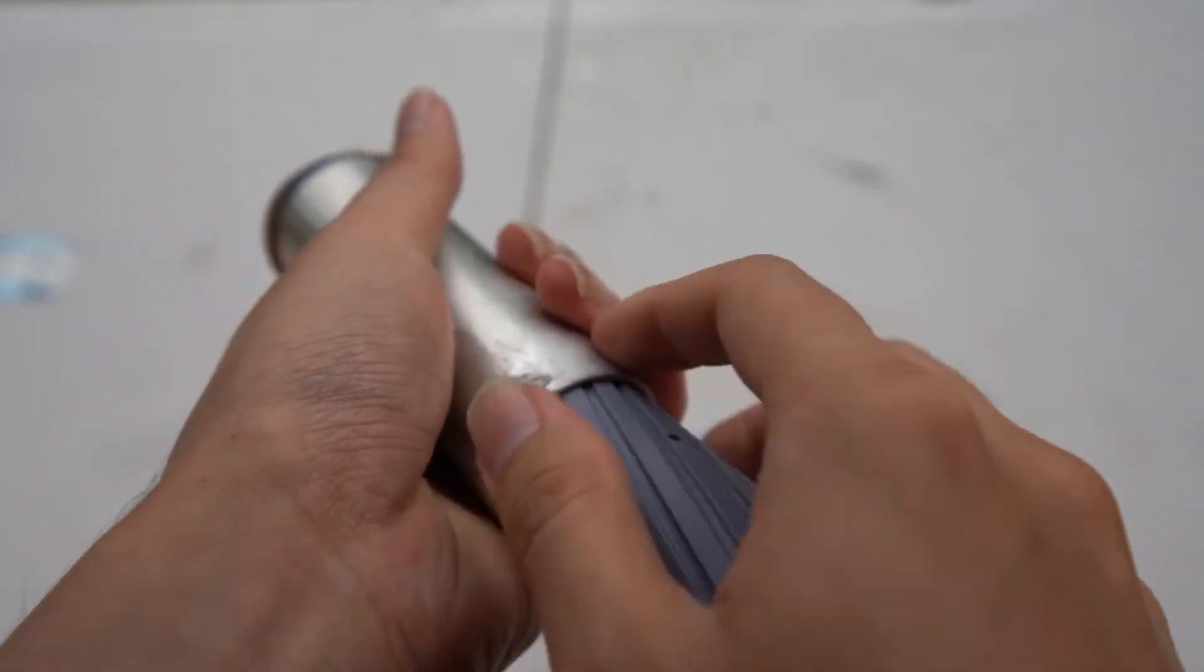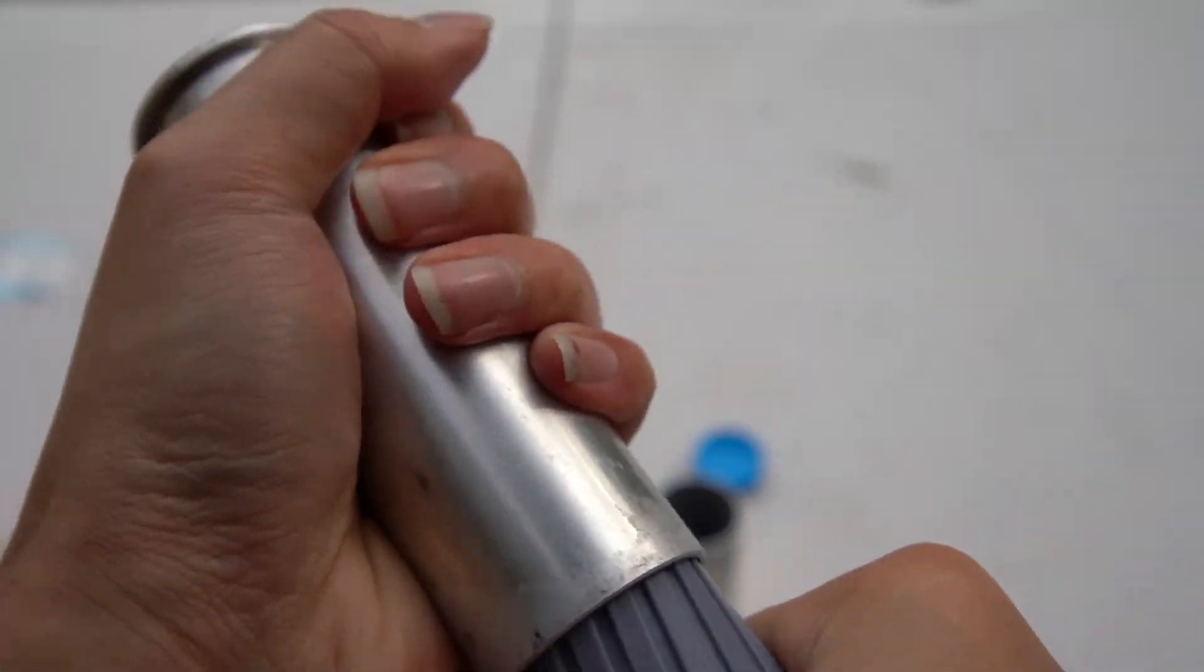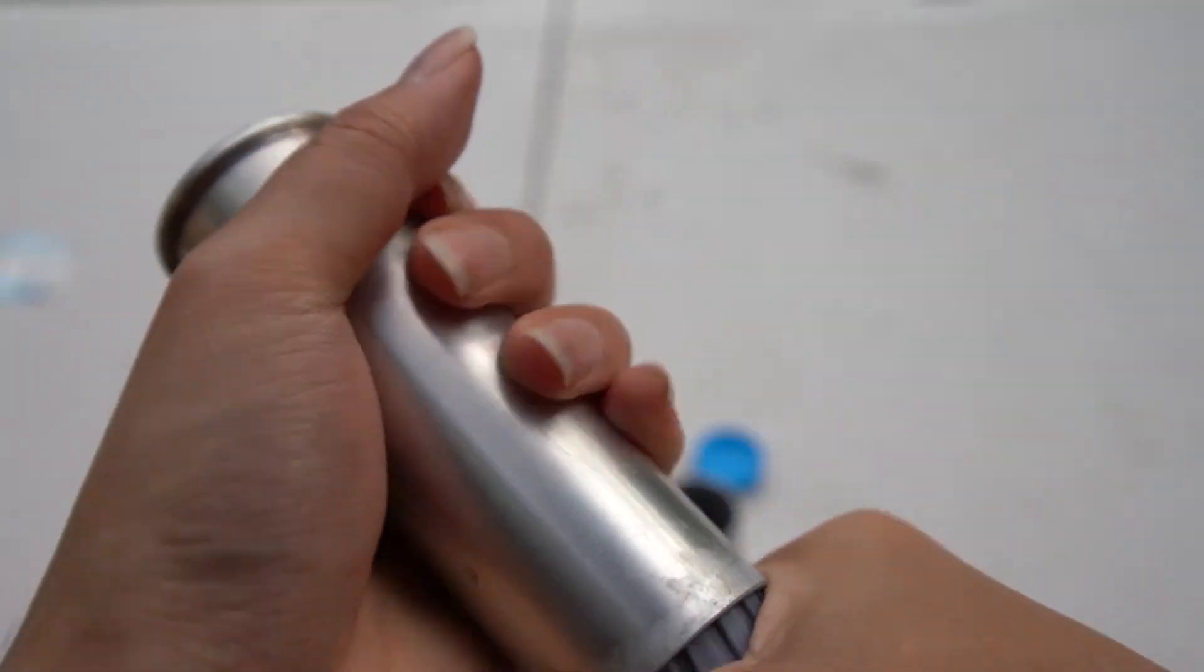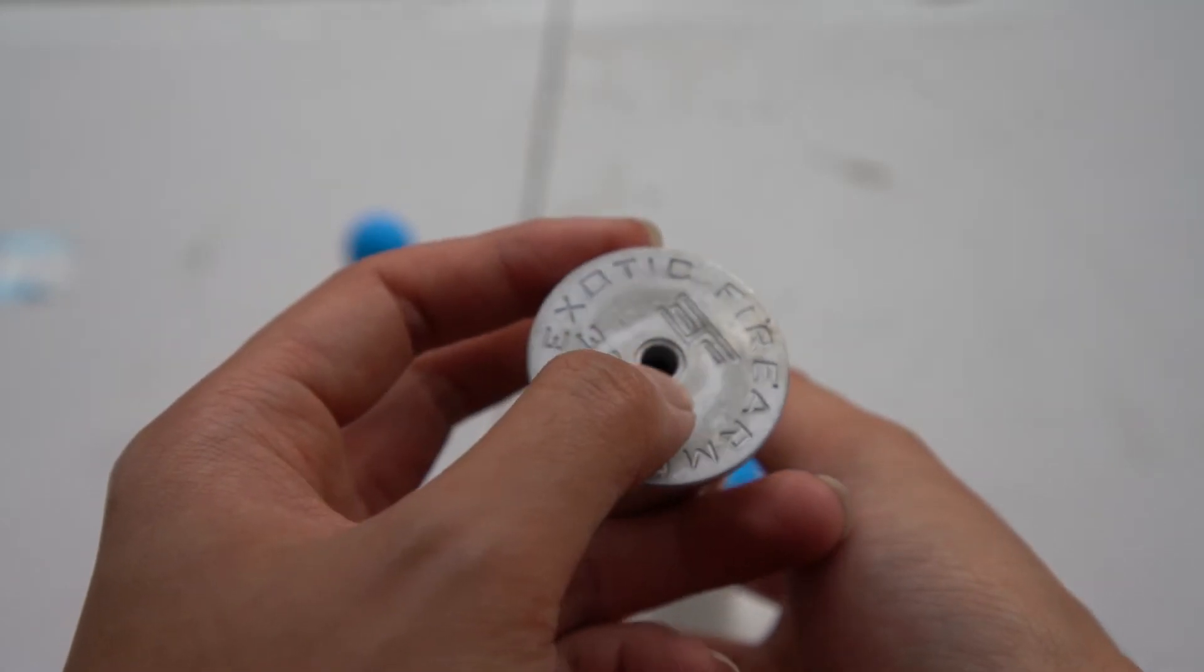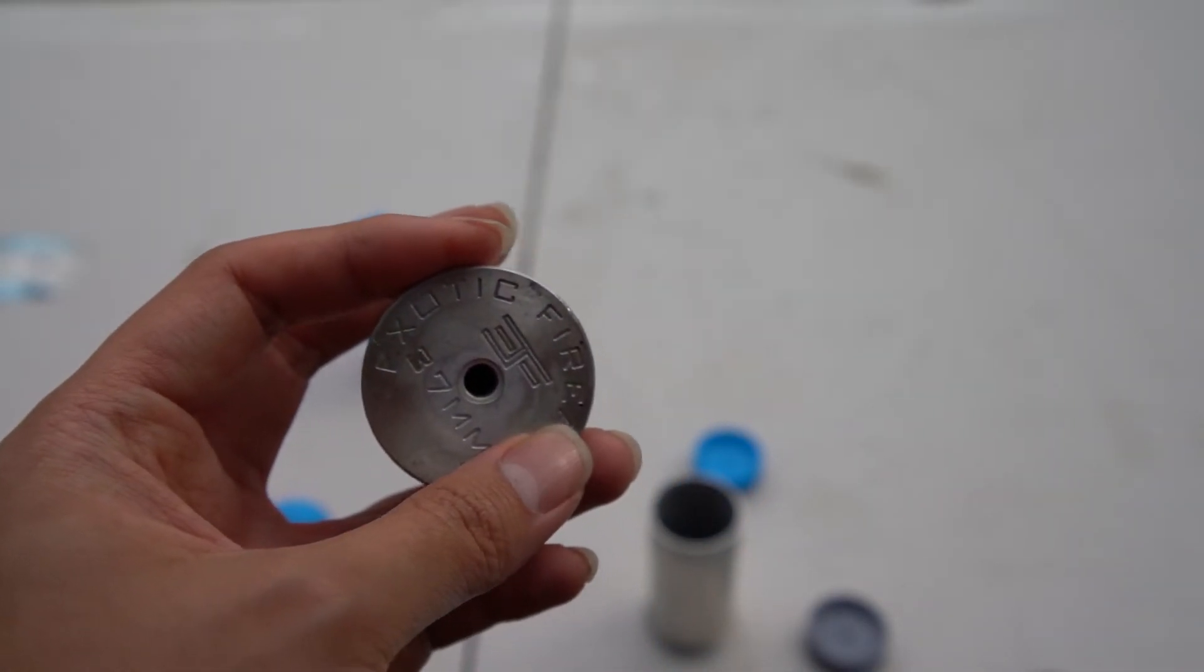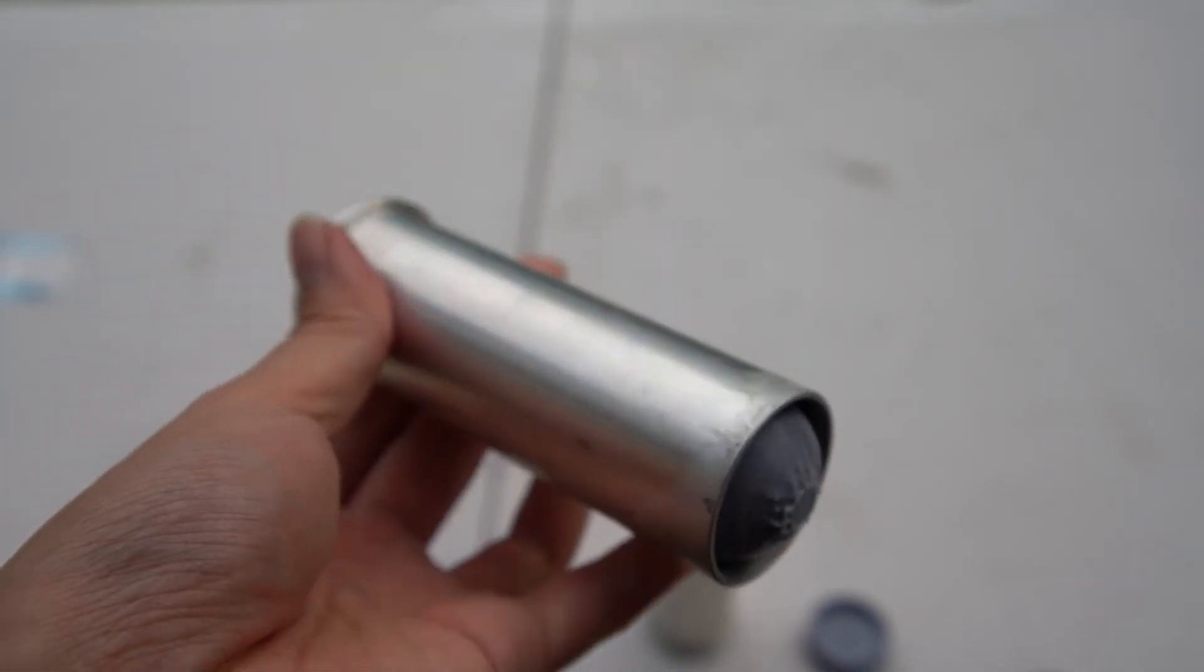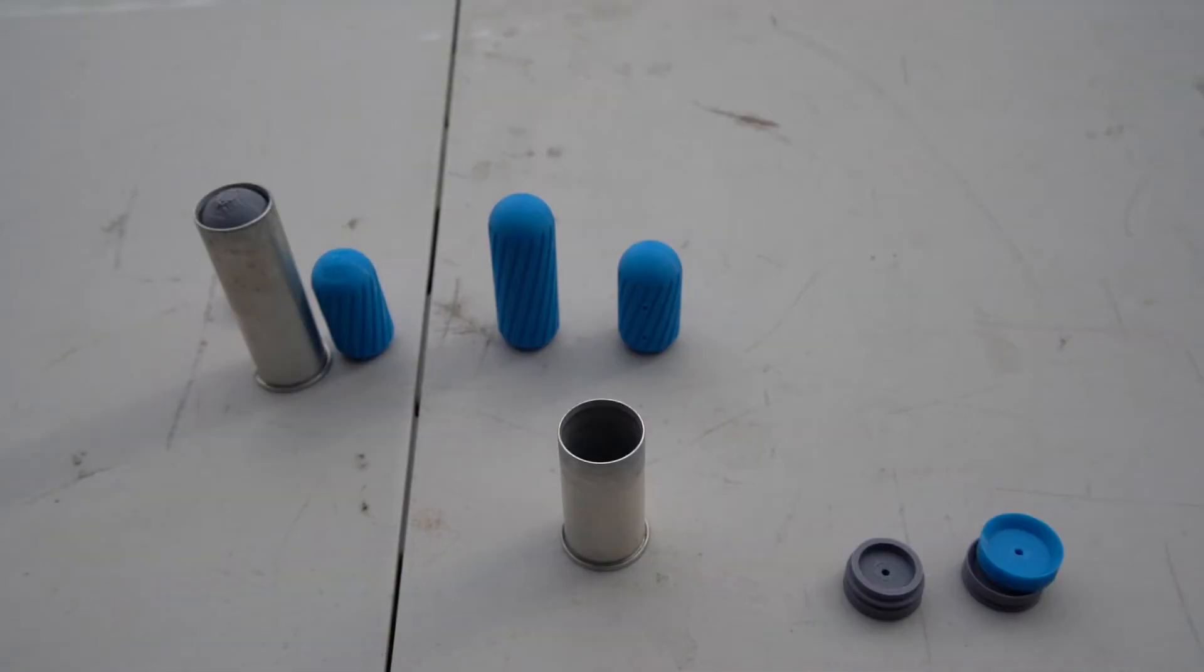And I will demonstrate here. I will attempt to fit one in the shell. Takes some effort. But it will fit like this. If for some reason you want to take it out without firing it, you can also use a barbecue bamboo stick to punch it out. Very easy, like this.